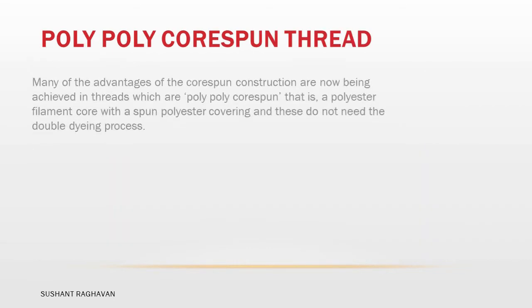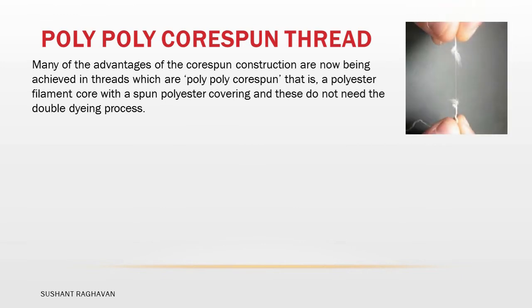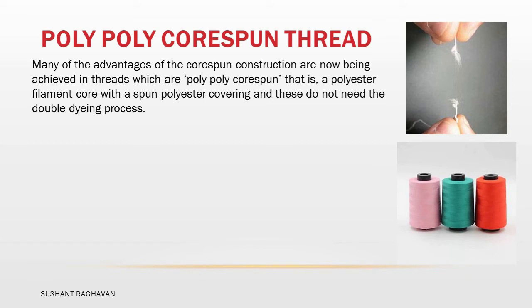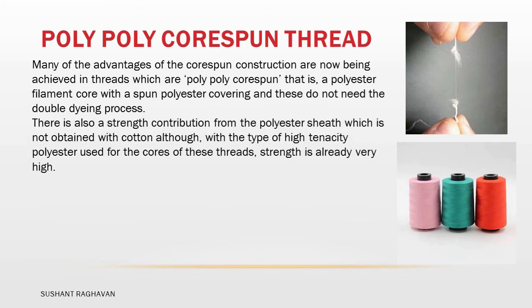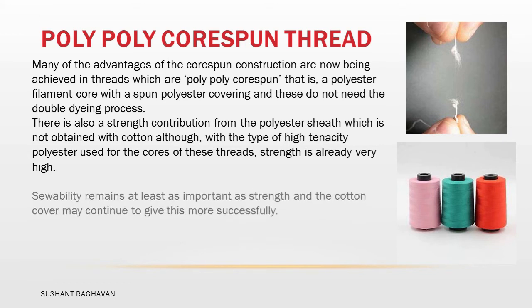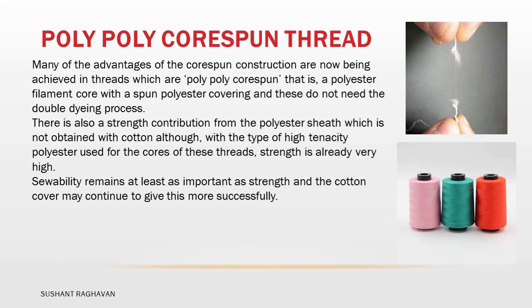Poly-poly core spun thread. Many of the advantages of core spun construction have now been achieved in threads which are poly-poly core spun — that is, a polyester filament core with a spun polyester covering — and these do not need the double dyeing process. There is also a strength contribution from the polyester sheath which is not obtained with cotton, although with the type of high tenacity polyester used for the core of these threads, strength is already very high. Sewability remains at least as important as strength, and the cotton cover may continue to give this more successfully.